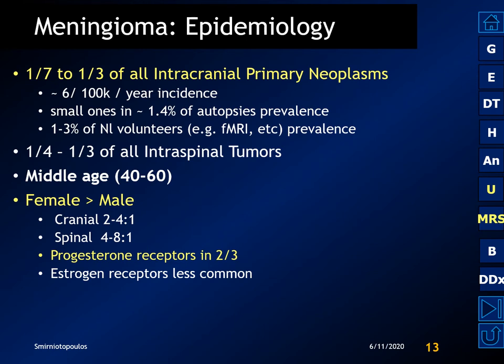Meningiomas represent up to one-third of all intracranial primary tumors, with an annual incidence of approximately 6 per 100,000 humans per year. They represent a significant number of all intraspinal tumors.